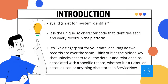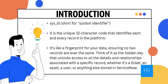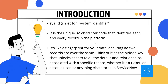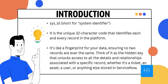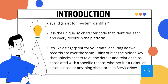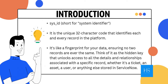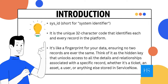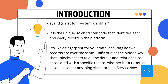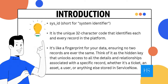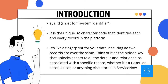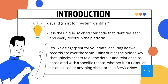What is a sys ID? Sys ID is short for System Identifier — it is a unique 32-character code that identifies each and every record in the platform. It is unique throughout the platform and throughout the whole world. If there are thousands of instances of ServiceNow, every sys ID generated will be unique regardless of whether they are on the same platform or not. It's just like a fingerprint for your data: similar to your fingerprint which is unique globally even among millions and trillions of people, this sys ID will be unique throughout all ServiceNow instances.